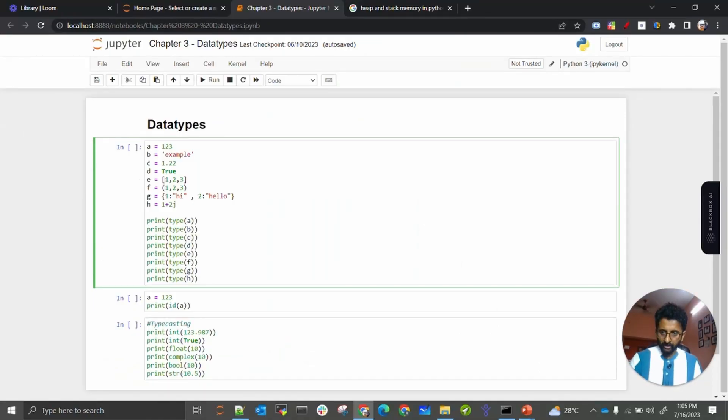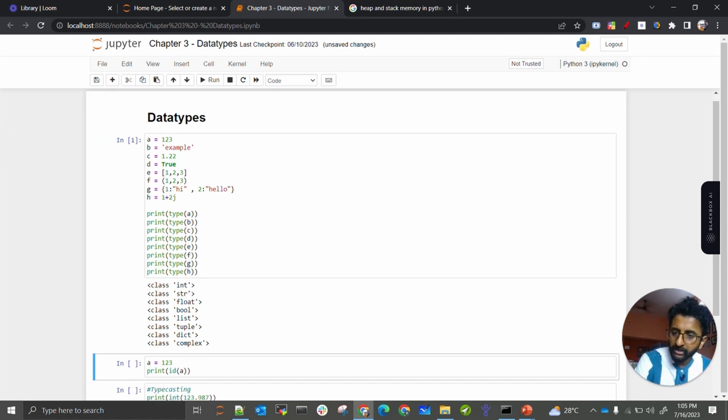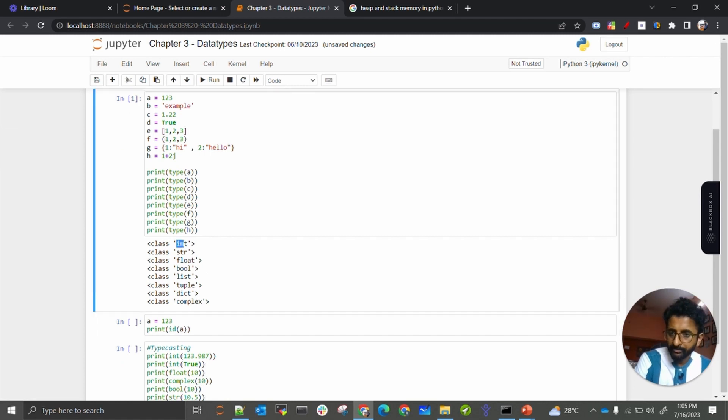Examples inside our Jupyter Notebook. I have taken different variables or identifiers and given different values. A has integer, b has strings, c has float, d has boolean. And this is the list, tuple, dictionary, and complex number. If you are not aware about list, tuple, dictionary, we will see them in upcoming sessions. Whenever I complete this operation using shift enter, it will tell me what type of particular identifier we have defined.